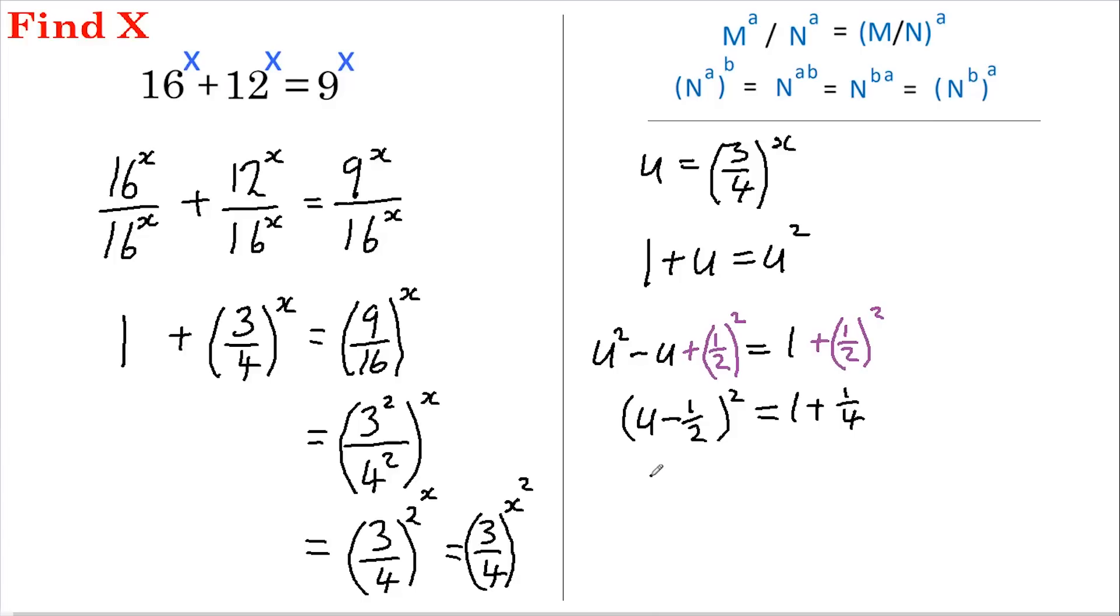We can now take the square root of both sides, so this gives us u minus 1 half, and this equals the square root of 5 over 4. U therefore equals 1 half plus or minus the square root of 5 over 4.